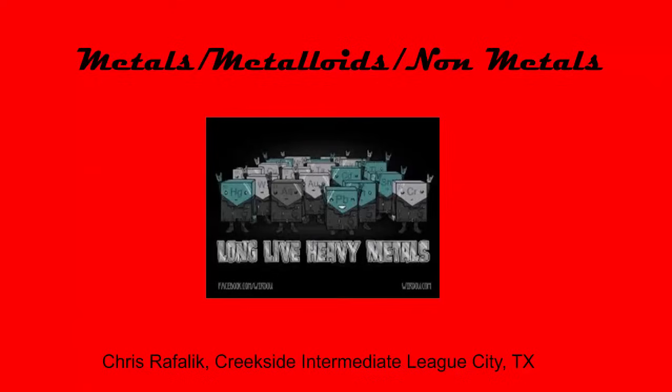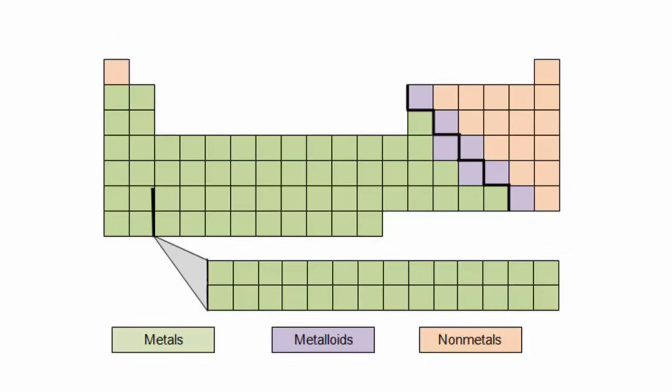Today we're going to talk about the periodic table with respect to metals, non-metals, and metalloids. Alright, so here we have a periodic table. You can see that it's divided into three different colors. So the colors that take up most of the periodic table are green, these are the metals.